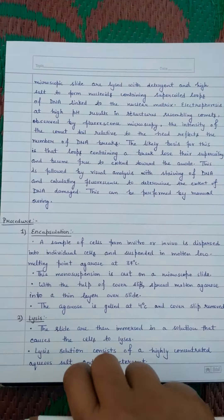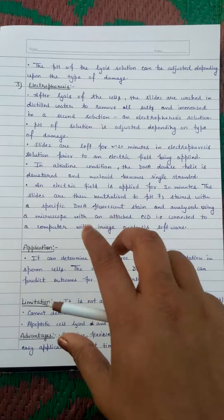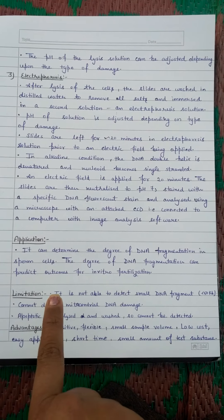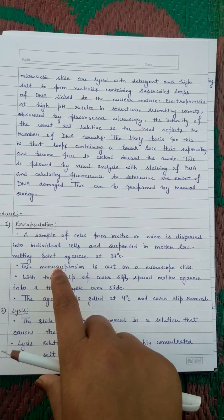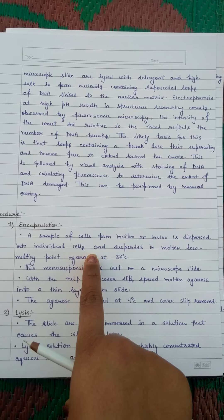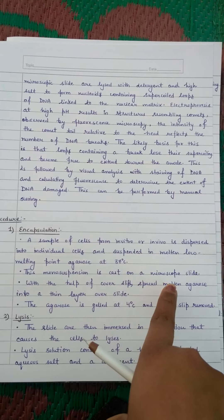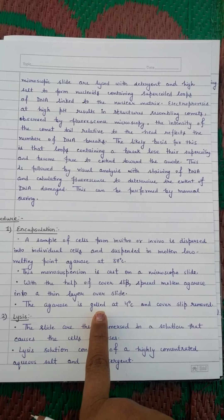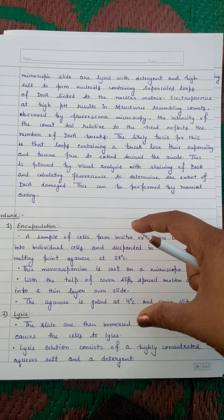The main preparation steps are: first, encapsulation; second, lysis; third, electrophoresis. In the encapsulation method, a sample of cells from in vitro or in vivo is dispersed into individual cells and suspended in molten agar at 37 degrees Celsius. A mono-layer suspension is cast on a microscopic slide, covered with a cover slip to spread the molten agar. The agarose then gels at 4 degrees Celsius and the cover slip is removed, encapsulating the cells inside the gel on the slide.